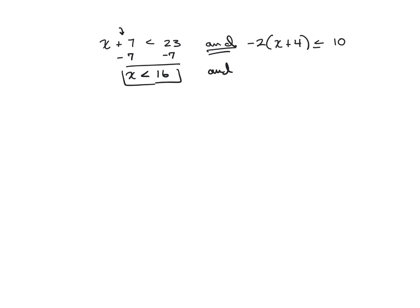For the second inequality, I'm going to use distributive property. Just be careful: the fact that the value I'm distributing is negative does not mean I flip the inequality — I only flip when I introduce a property of equality. So distributing the negative gives negative 2x minus 8 is less than or equal to 10. I add 8 to both sides, giving negative 2x is less than or equal to 18. Then I divide both sides by negative 2 — dividing by a negative means the inequality flips to greater than or equal to. So x is greater than or equal to negative 9.